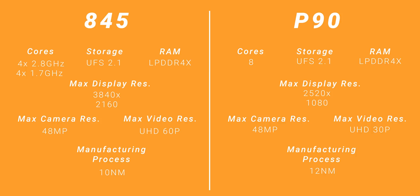Starting with the highest-end parts — the Snapdragon 845 and the Helio P90 — we see that both are manufactured with different-sized dies, and whilst they may contain the same number of cores and shoot the same maximum resolution photos, they differ in max resolution video shooting and viewing, since the P90 has a significantly weaker GPU. This is where I believe we should see the 845 pull much further ahead.